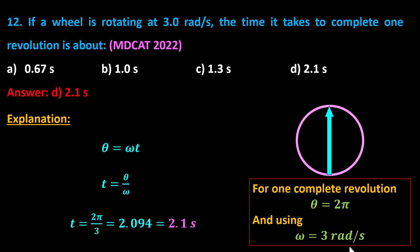we get the answer: t equals 2 pi over 3, which equals 2.094, approximately 2.1 seconds.